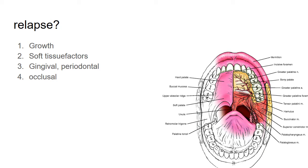Let's study the etiological factors which can result in relapse. We can divide them under three categories: growth factors, soft tissue factors, gingival and periodontal factors, and occlusal factors. For growth factors, consider a skeletal Class III pattern where the mandible is prognathic. Orthodontic treatment may correct that prognathism into a Class I appearance, but if the patient is a 19- or 20-year-old male where some growth is still present, there is a higher chance of relapse. In men, growth continues until mid-20s, whereas in women it continues until early 20s. Based on the amount of remaining growth, the retention period may be prolonged.